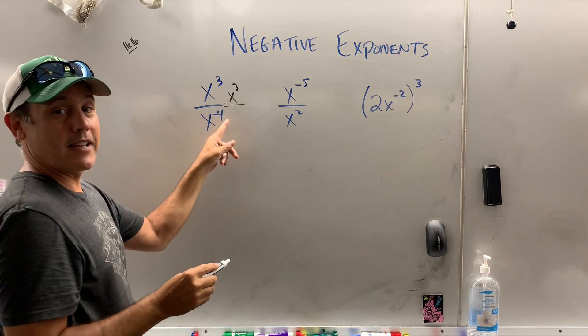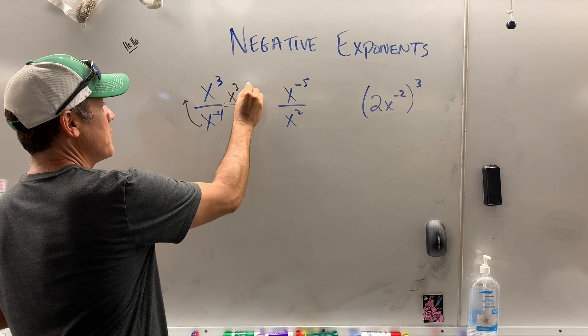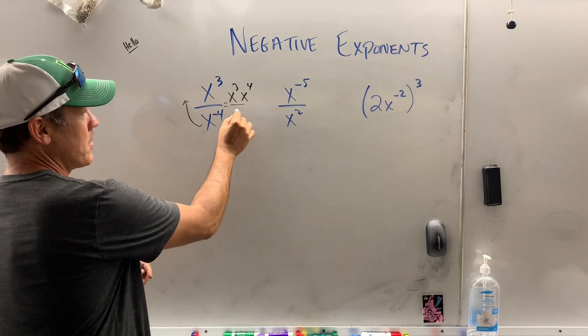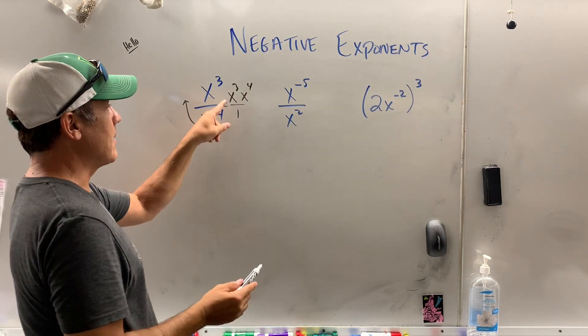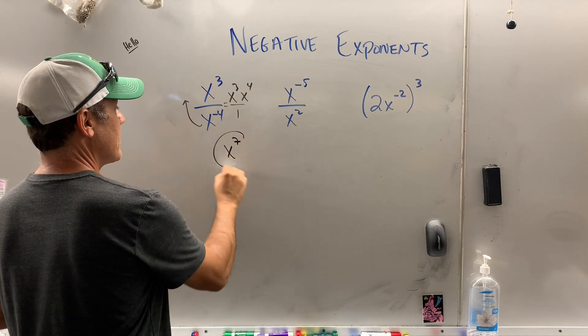But this x to negative 4 is downstairs, we gotta move him upstairs till he becomes positive. And there's really a 1 over there, but nobody ever puts it. So x cubed times x to the 4th is x to the 7th.